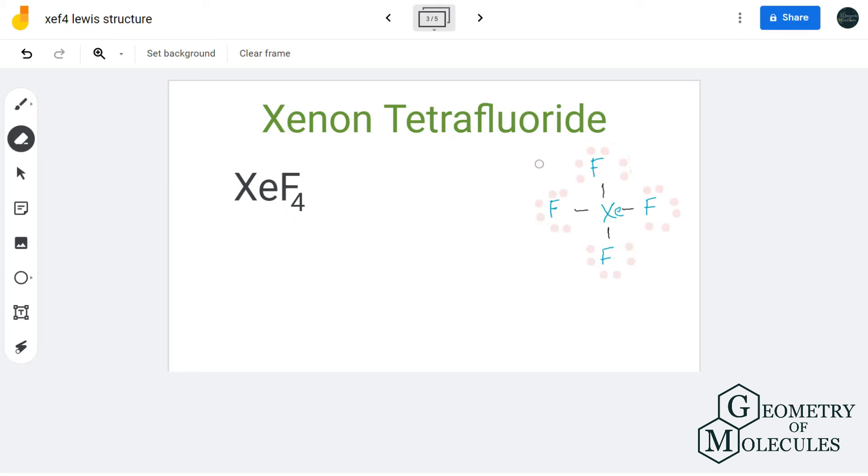As you can see, we are left with 4 valence electrons and all the orbitals of fluorine are full. We'll place these two lone pairs of electrons, or non-bonding pairs of electrons, on xenon as it can accommodate more than 8 electrons.